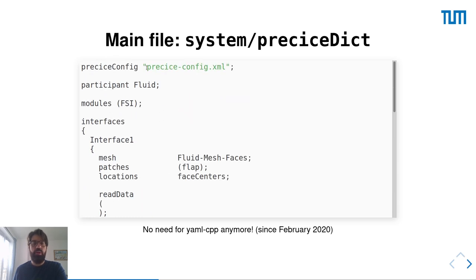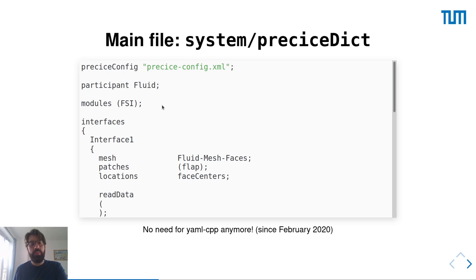What does this dictionary contain? First, it points to the preCICE configuration file. Then it specifies that this solver is the fluid participant, as declared also in the preCICE configuration file. In the case of OpenFOAM, it also needs to specify what kind of problem to couple, because the OpenFOAM adapter provides different coupling data users — different features that we can enable and disable on demand.